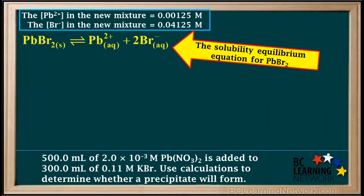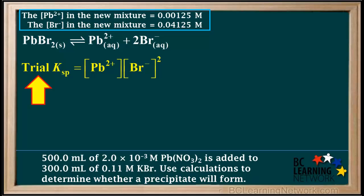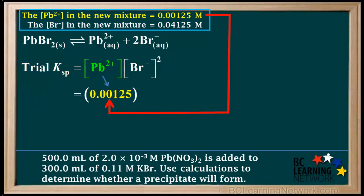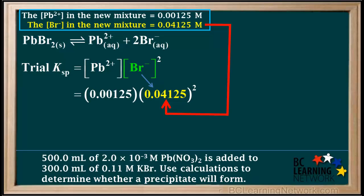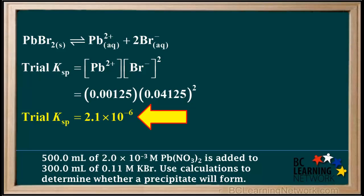In order to determine the trial KSP, we start by writing the solubility equilibrium equation for lead(II) bromide, PbBr₂, and use this to write the KSP expression for PbBr₂. Because we are using concentrations of Pb²⁺ and Br⁻ that are not at equilibrium, we call this a trial KSP. We substitute 0.00125 for [Pb²⁺] and 0.04125 for [Br⁻] — remembering that [Br⁻] is squared — giving: 0.00125 × (0.04125)² = 2.1×10⁻⁶ for the trial KSP.